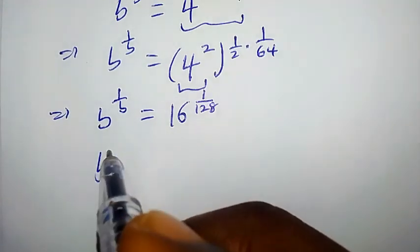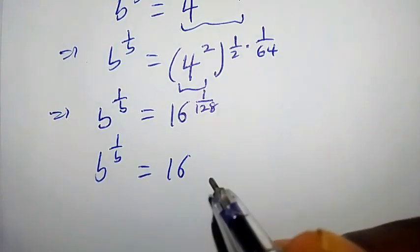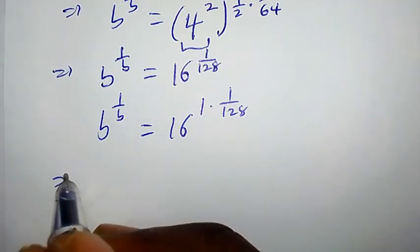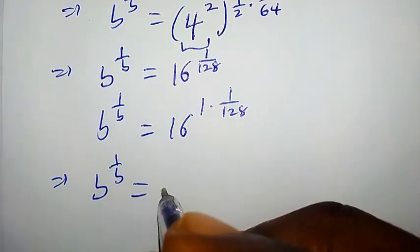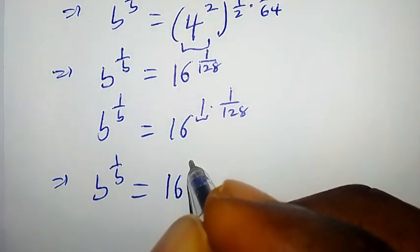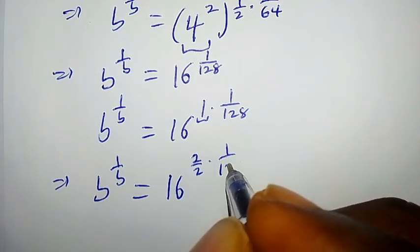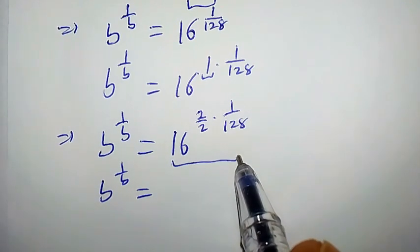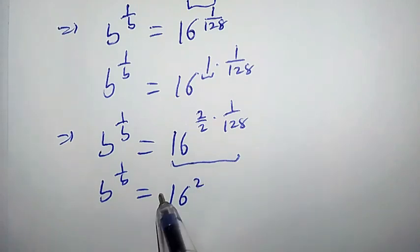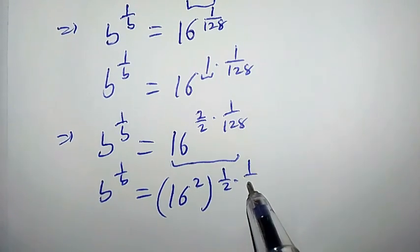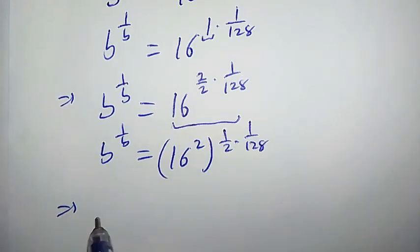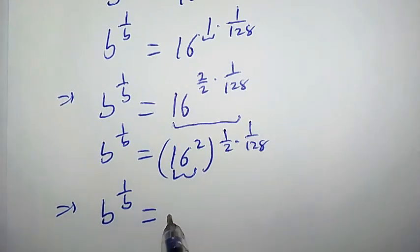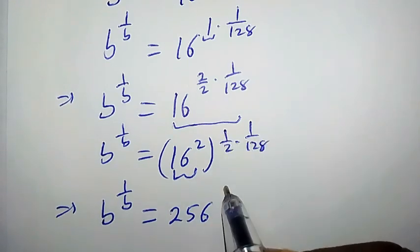Let's continue. b to the power of 1 over b is equal to 16 to the power of 1 over 128. We can write 1 over 128 as 1 times 1 over 128, and rewrite 1 as 2 over 2. So b to the power of 1 over b equals 16 to the power of 2 times 1 over 2 times 1 over 128. This implies 16 to the power of 2 is 256, and 1 times 1 over 128 gives 1 over 256. So b to the power of 1 over b equals 256 to the power of 1 over 256.